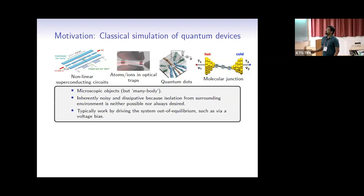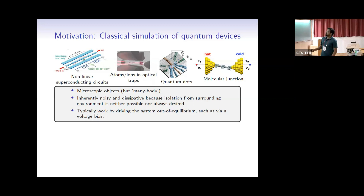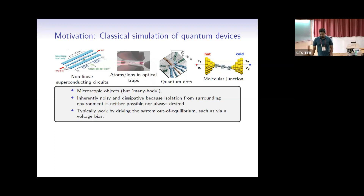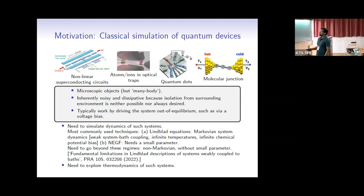These are some of the platforms, and what are some of the common properties of all of them? First of all, they are microscopic objects, but they are not really a single body — they are many-body. They are inherently noisy and dissipative because isolation from the surroundings is neither possible nor often desired, since you want to control these things experimentally. They typically work by driving the system out of equilibrium, for example via voltage bias. So these are driven-dissipative quantum many-body systems, and we'd like to know the dynamics to model these kinds of settings.